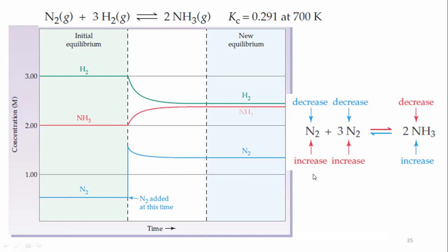To summarize: if you increase the concentration of nitrogen, or if you increase the concentration of hydrogen, or if you decrease the concentration of ammonia, the explanation is the same. By increasing the concentration on the reactant side or decreasing the concentration on the product side, the concentration of reactants decreases over time and the concentration of ammonia increases. The reaction proceeds towards the product side.